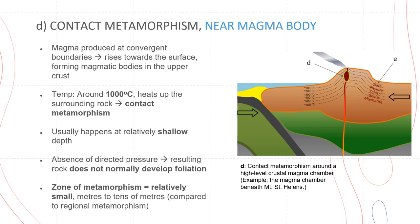The previous three examples showed examples of regional metamorphism. For our fourth example, we'll be looking at contact metamorphism, which happens near magma bodies. Magma produced at convergent boundaries rises towards the surface, forming magma bodies in the upper crust. These temperatures of around 1000 degrees Celsius heat up the surrounding rock, resulting in contact metamorphism.